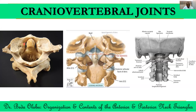The atlanto-axial joints are more complex, consisting of three joints: the joint between the lateral masses of atlas and axis, and also the joint between the odontoid peg and the anterior arc of the atlas in front, or the transverse atlanto ligament behind. Remember that transverse atlanto ligament is part of the cruciate ligament and it articulates the posterior surface of the odontoid peg. It restricts the odontoid peg, which is on the anterior aspect of the neural canal of the atlas.